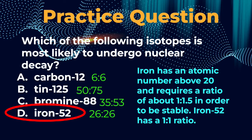Now for the next three choices, B, C, and D, all three of these elements—tin, bromine, and iron—have nuclei with more than 20 protons. So we're really going to now be looking for that 1 to 1.5 ratio.